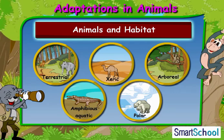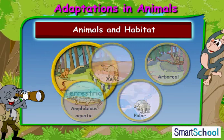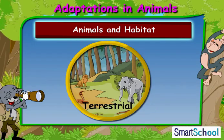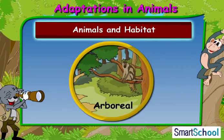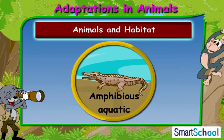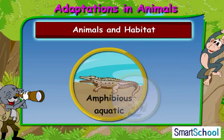Some examples of types of habitat are: Terrestrial, Xeric, Arboreal, Amphibious, Aquatic, and Polar.